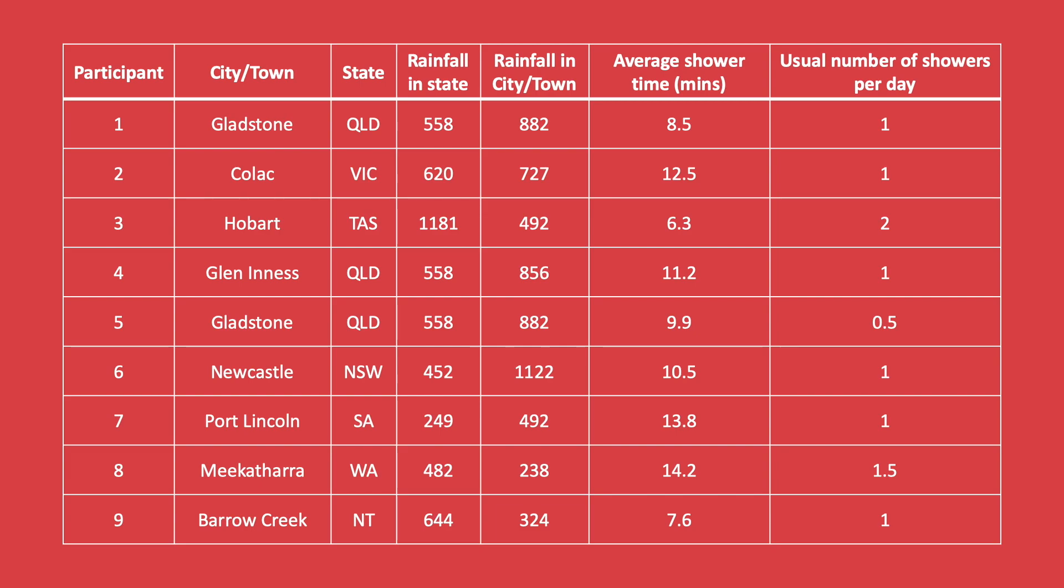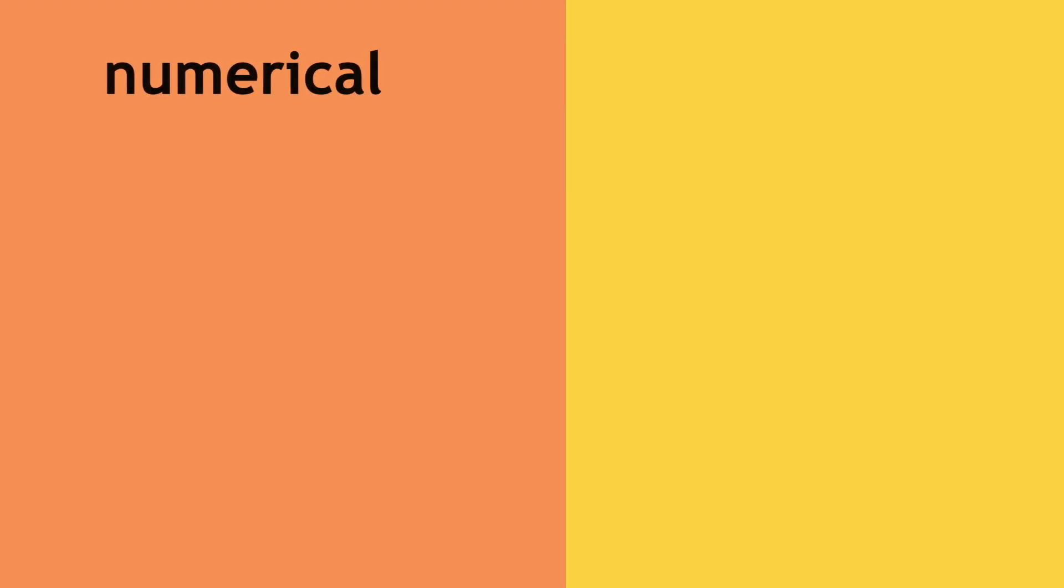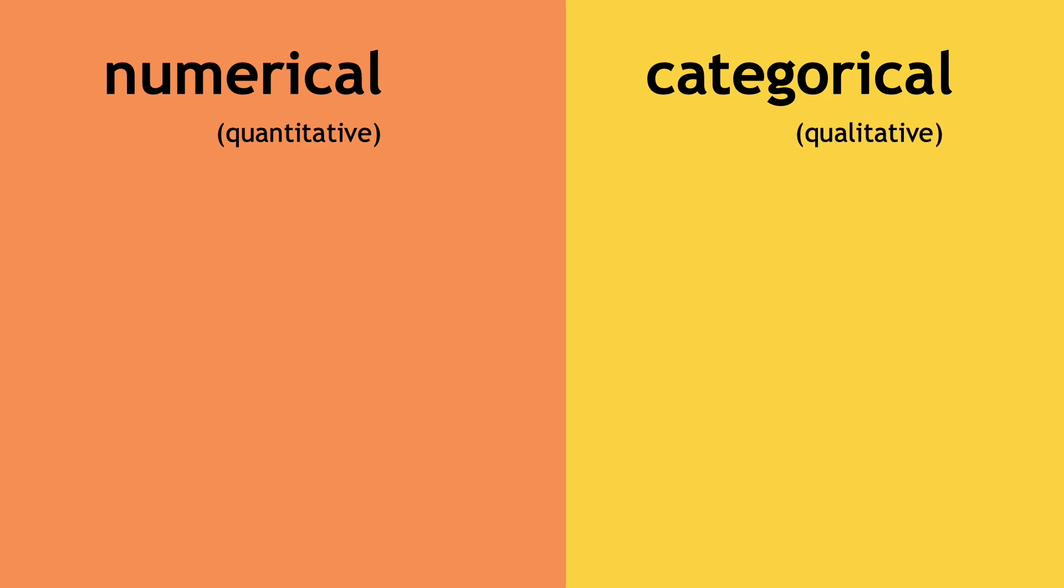Different types of variables will lend themselves to different ways of summarizing them. In general, we classify data as either being numerical or categorical. Sometimes the terms qualitative and quantitative are used. Categorical data typically includes variables that are words, whereas numerical data is usually numbers, but it's not always this simple.